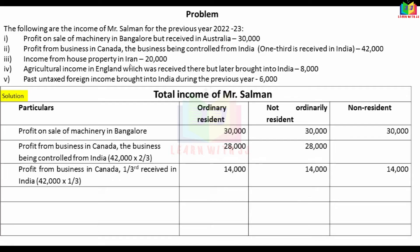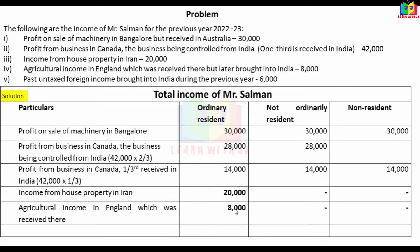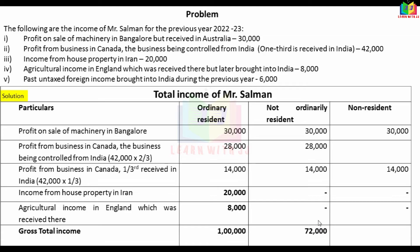Income from house property in Iran is foreign income. Agricultural income in England was received there — this is foreign income, 8,000 (for ordinary resident). Summary totals: ordinary resident = 30 + 28 + 14 + 20 + 8 = 1,00,000; not ordinary resident = 30 + 28 + 14 = 72,000; non-resident = 30 + 14 = 44,000.